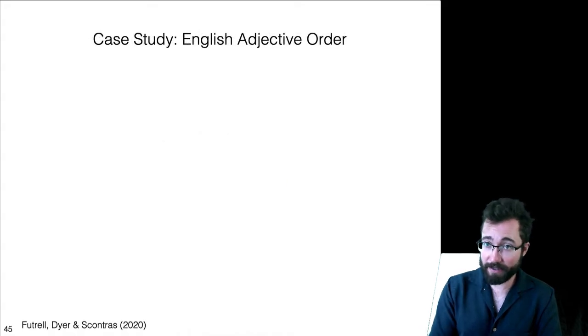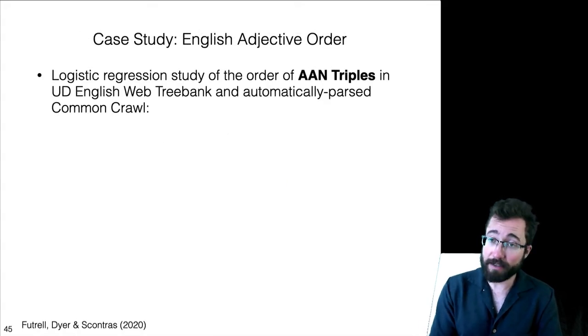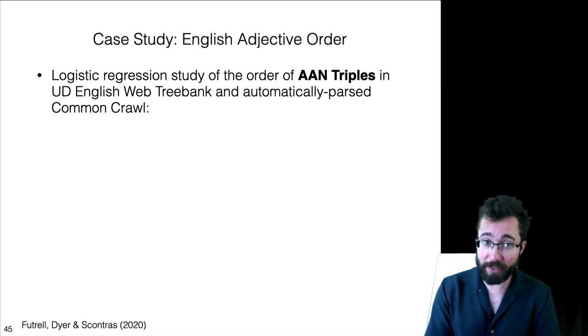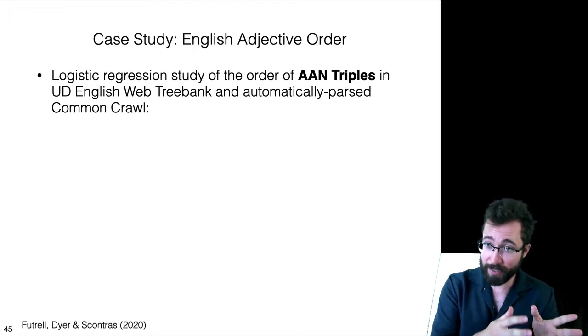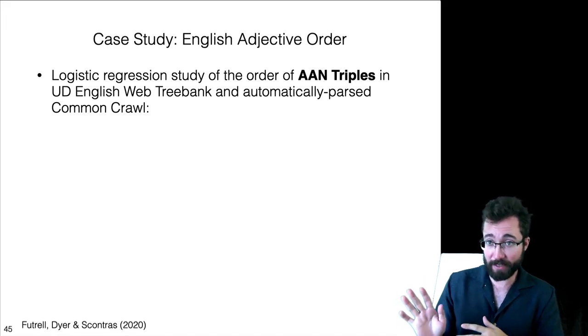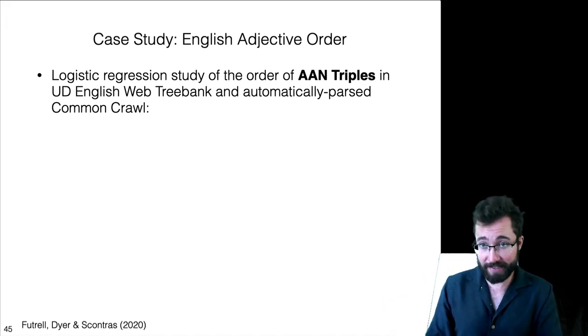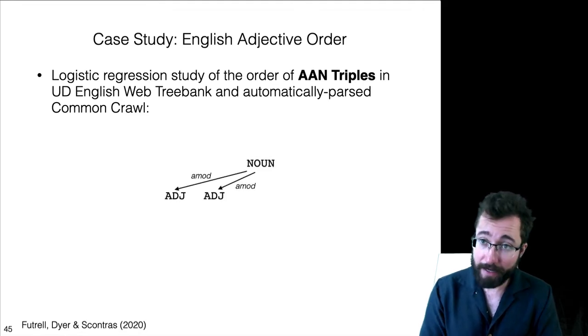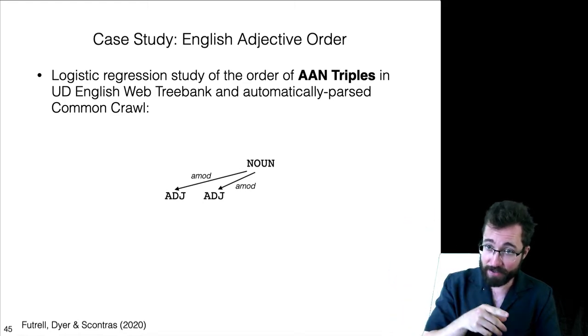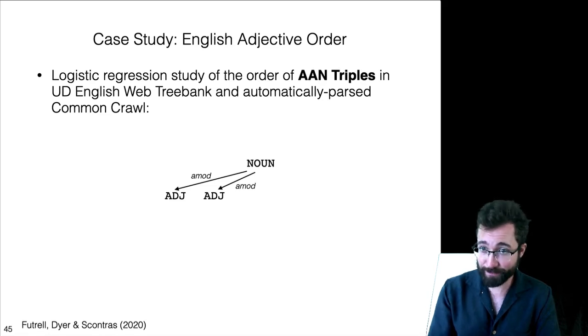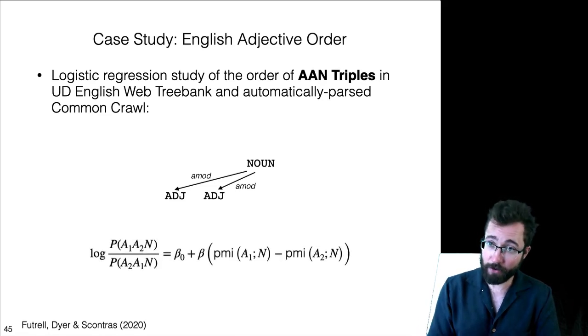So, we did a corpus study of adjective order in English. This was a logistic regression study trying to predict the order of these structures that we call AAN triples. We're trying to predict the order of these things both in the universal dependencies web tree bank for English and also a large automatically parsed subset of the English common crawl parsed using syntax net. An AAN triple is something that looks like this. It's something that has part of speech noun as the head and then it has two dependents, each with relation type A mod and part of speech edge in a dependency tree bank.